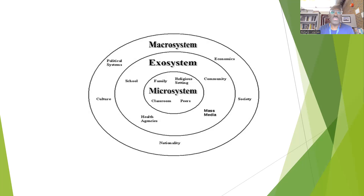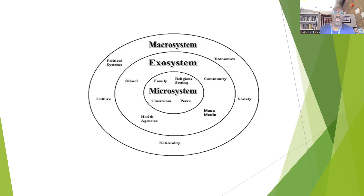The next level system, the mesosystem — sometimes referred to as the exosystem — is really about where are the places that you go every single day. We go to the grocery store, we go to school, we go to health agencies, we go to the gym, we go to work. Those are part of a larger system called our mesosystem — it's the places that we go.